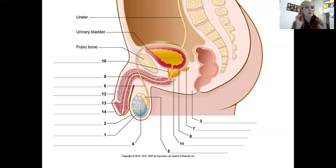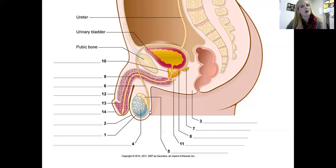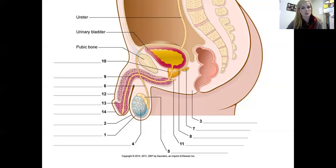Within the seminiferous tubules, sperm cells are produced as immature sperm cells. As they exit the testes, they make their way into what looks like a solid structure but is actually a very highly coiled tube that sits on top of the testes — this is called the epididymis, E-P-I-D-I-D-Y-M-I-S. Immature sperm cells will slowly travel through that tube and become mature sperm cells.